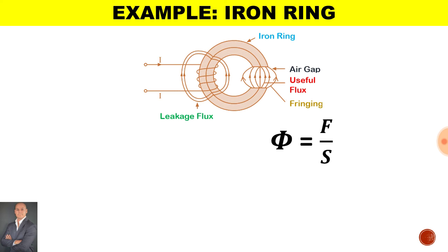Therefore, if we look at the formula, we can say flux is equal to MMF over S, or we can say it is equal to the current multiplied by the number of turns divided by the reluctance.